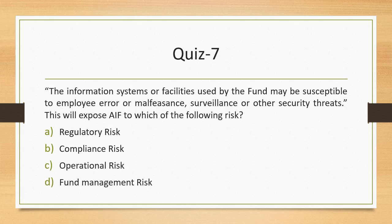Question 7: The information systems or facilities used by the fund may be susceptible to employee error or malfeasance, surveillance, or other security threats. This will expose the AIF to which risk? Any such risks related to human error or system-related risk fall under the category of operational risk. Please note that people, process, systems, or external event related risks are all part of operational risk.